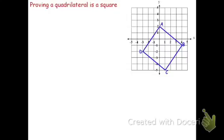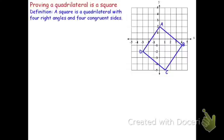The reason being is if we look at the definition, a square is a quadrilateral with four right angles and four congruent sides. The quadrilateral with four right angles is a rectangle, so we need to prove that it's a rectangle, but we also have to show that it has four congruent sides, which is the definition of a rhombus. So really we're proving that to be a square, it has to be both a rectangle and a rhombus.